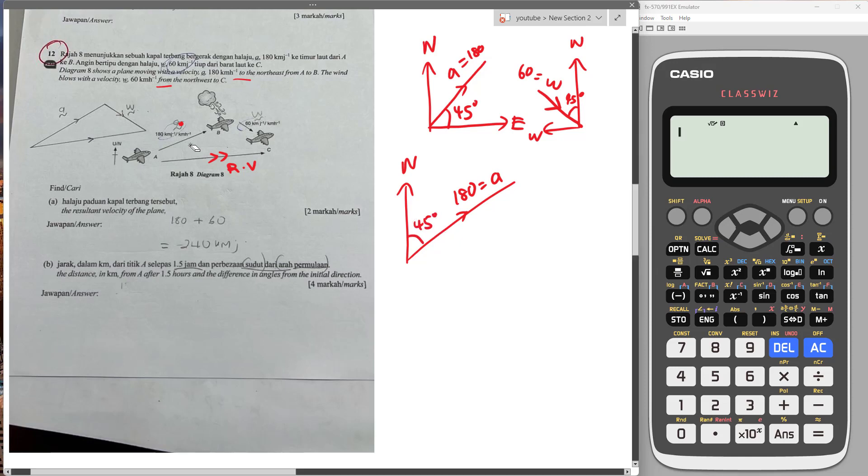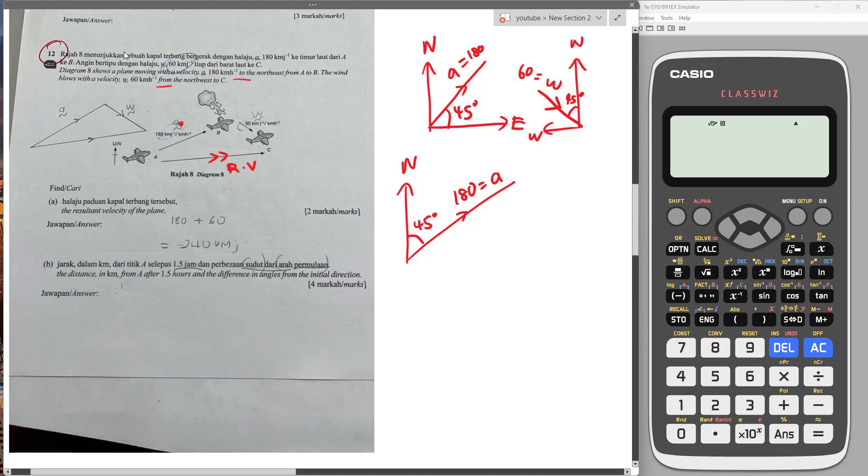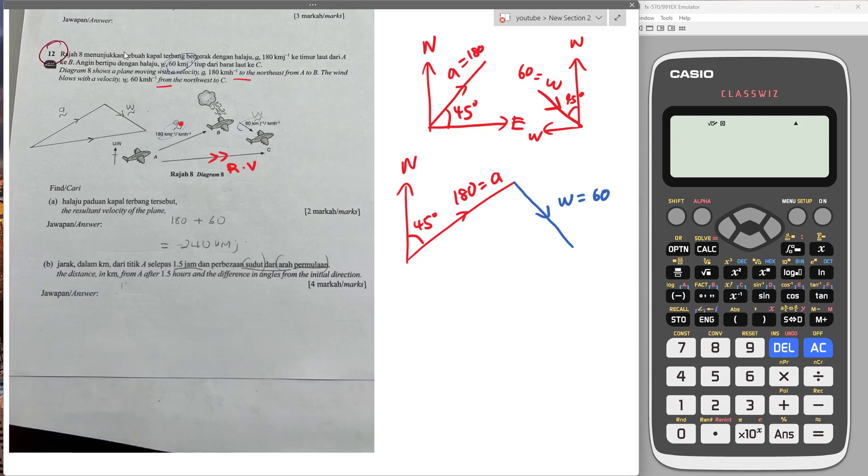The wind is blowing at 45 degrees. So the wind, maybe I'll use another color to give you some idea. The wind is blowing like this, W will be 60. But how am I going to write the angle? I'll draw a north here as well. You learned about bearing, right? You know about alternate angles. If here is 45, then the alternate angle will be 45 as well.